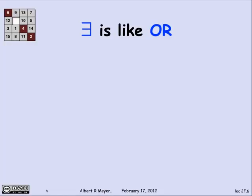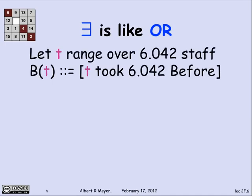Similarly, the backwards E there exists acts like an or. If I tell you that t is now ranging over the 6042 staff, just as s was, and I write B of t, the predicate of t that means t, the staff member t, took 6042 before.